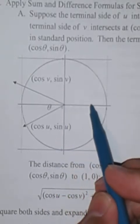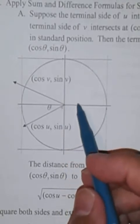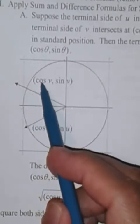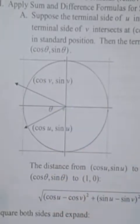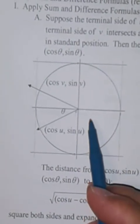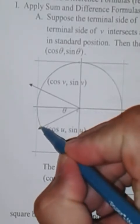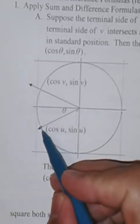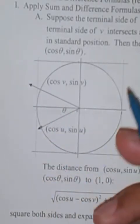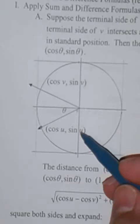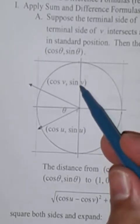Then v is some other angle whose terminal side intersects the unit circle at the point (cosine v, sine v). The difference between the two angles we'll call theta. We consider the distance between those two points: the square root of the quantity (cosine u minus cosine v) squared plus (sine u minus sine v) squared.